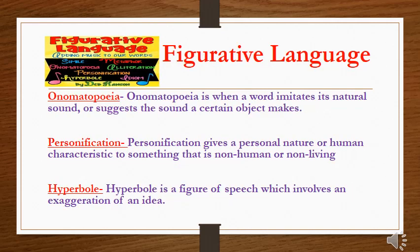Now students, in this slide, the next figurative language we can see is onomatopoeia. Onomatopoeia is when a word imitates its natural sound or suggests the sound a certain object makes. For example: smash, dripped, crashed.